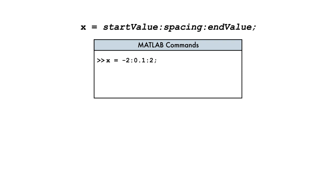Let's take a look at this example. We begin with a starting value, negative 2. The spacing is 0.1, and the end value is 2. We separate the numbers with colons. And there we have it, a row vector from negative 2 to 2 in steps of 0.1.